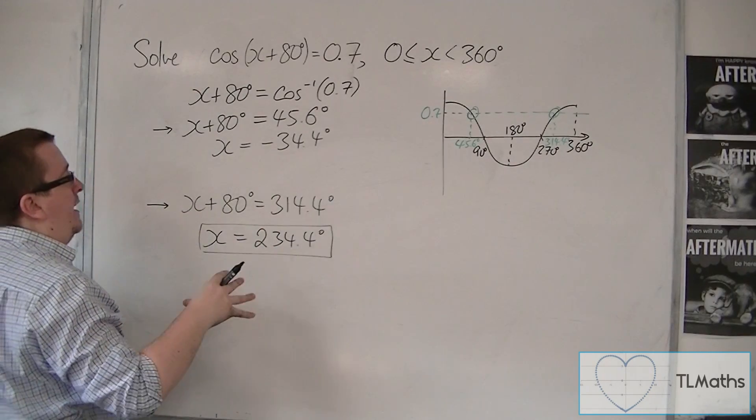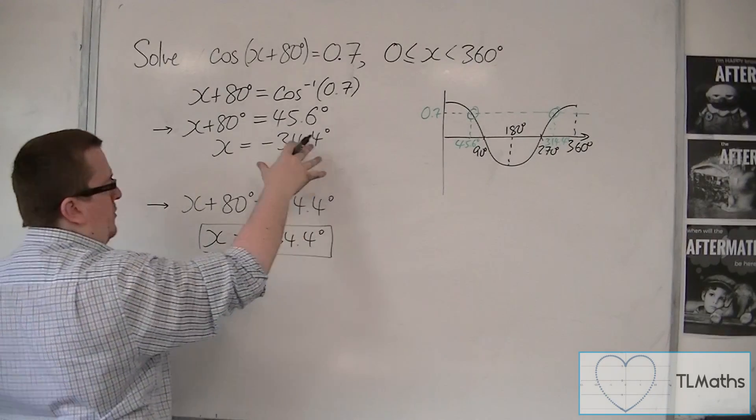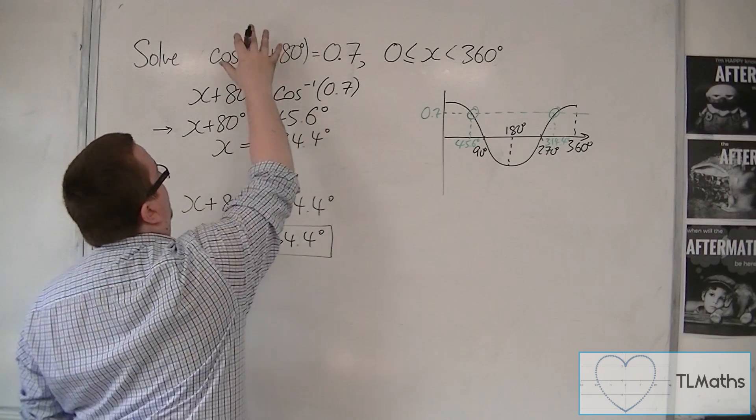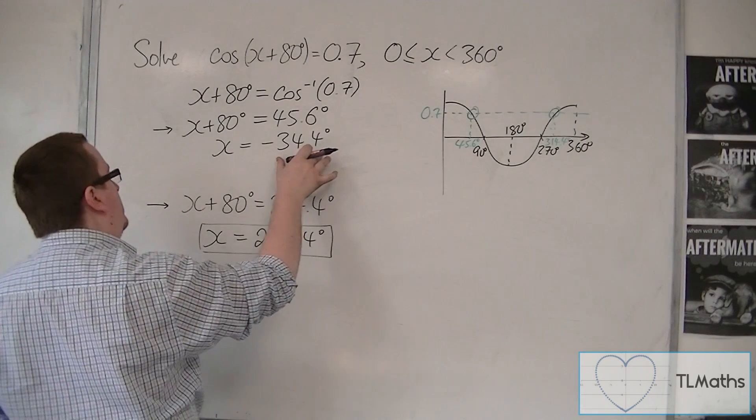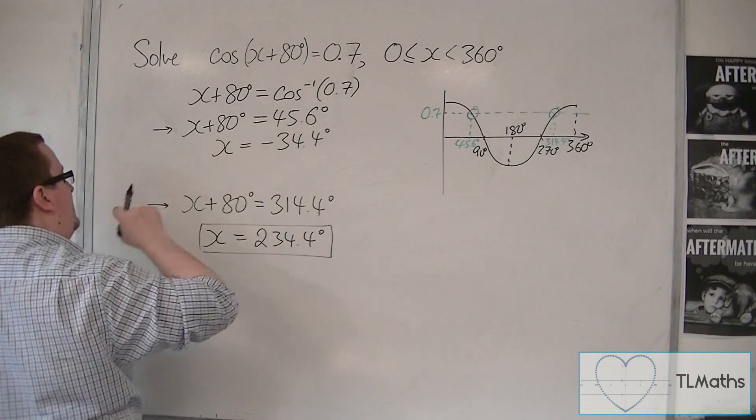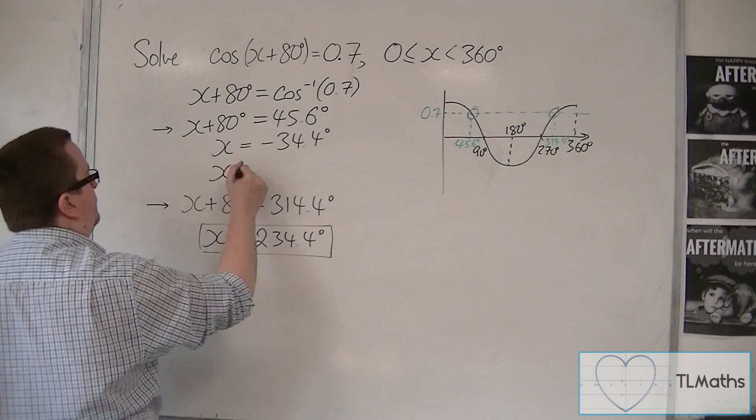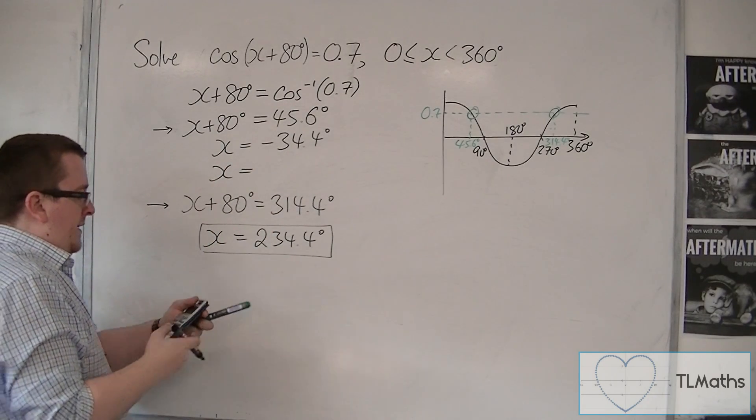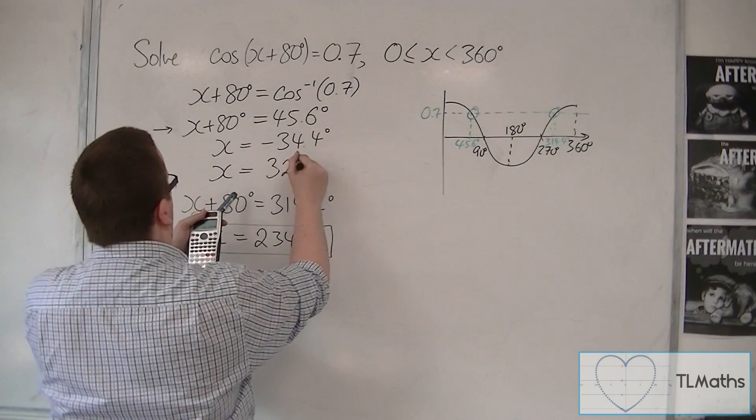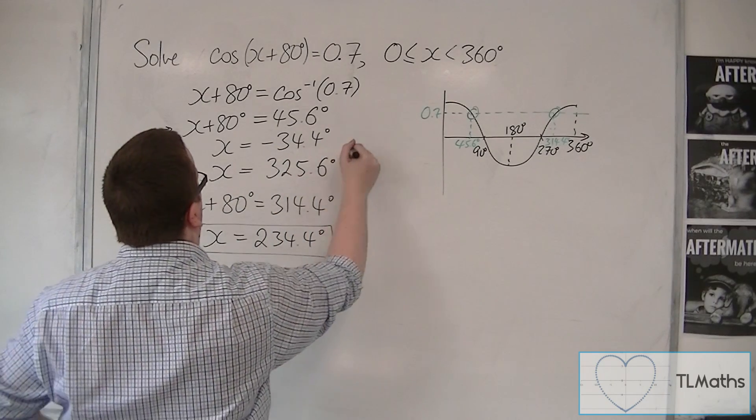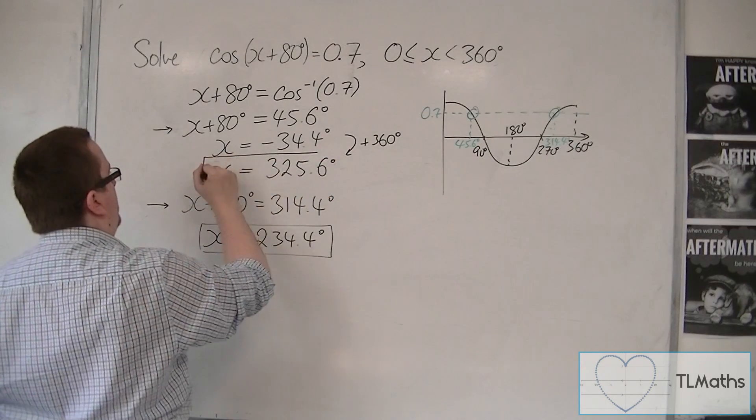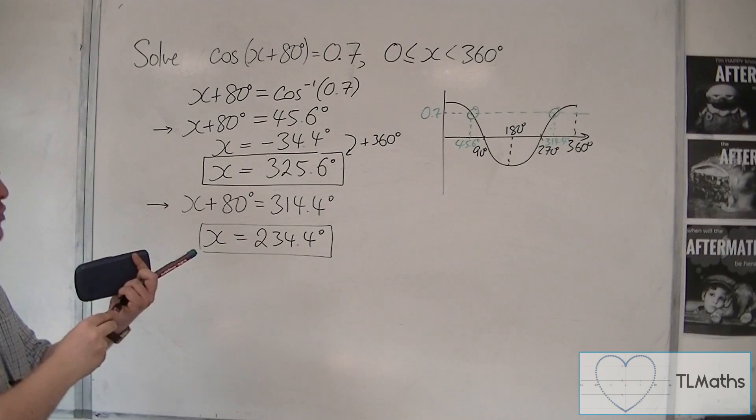In order to get it into the range, I'm going to add 360 degrees. I'm going to add the period of the function cos x to that. So adding 360 to this gets me 325.6 degrees. I've added 360, the period of the function, to get that solution.